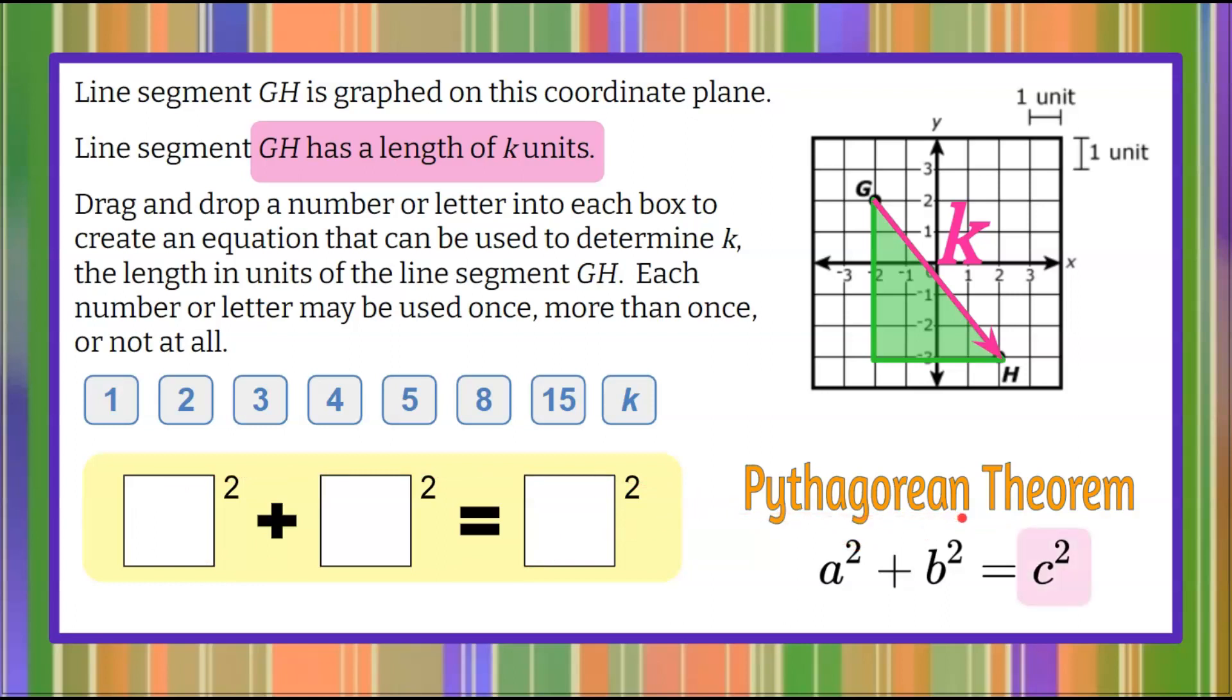When we talk about c, that is our longest side, the side opposite the right angle, our hypotenuse. So we can see that c in this equation is k. So we're going to take k and we're going to put it in that equal to box, k squared. So this is our hypotenuse, or c squared, is represented from this problem as k squared.